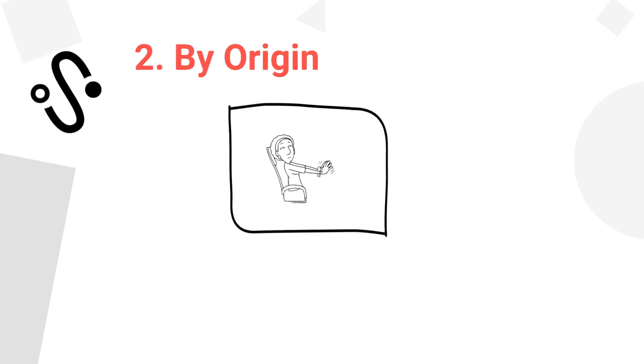By origin, the data can be structured, unstructured, or semi-structured. Structured data is well-organized data stored in relational databases or spreadsheets, easily searchable and analyzable.